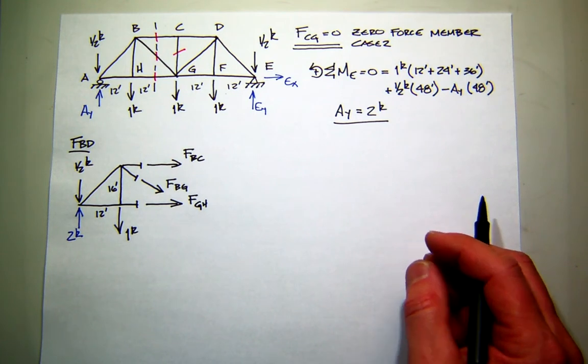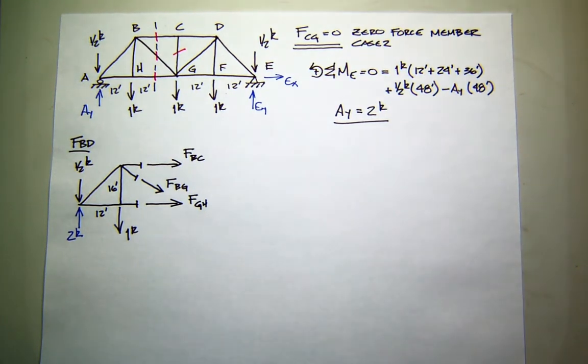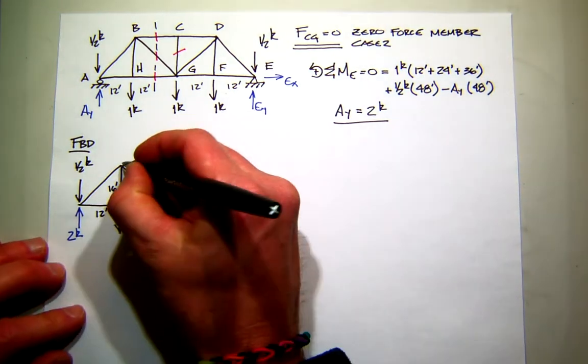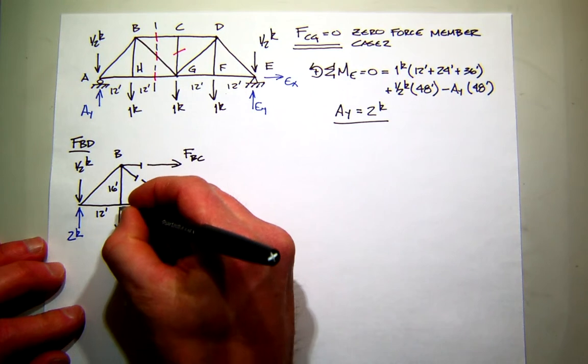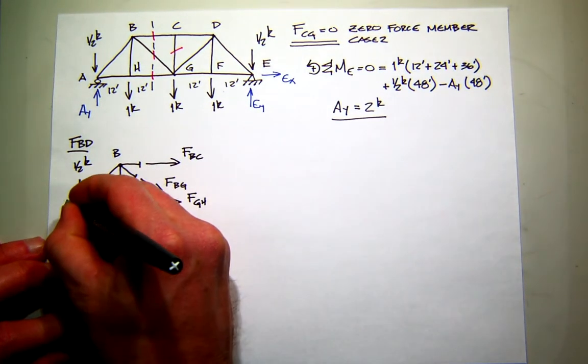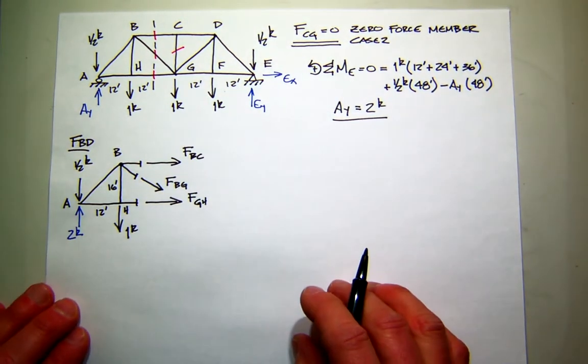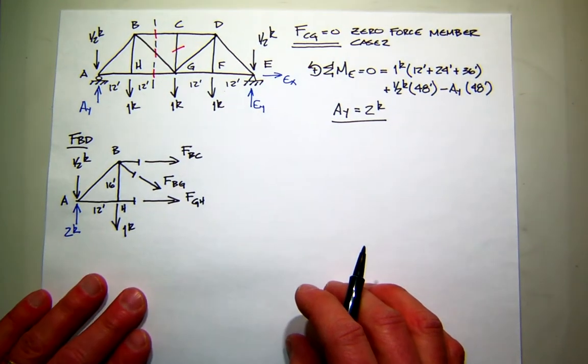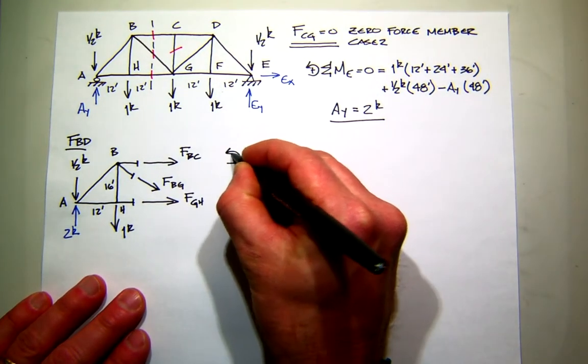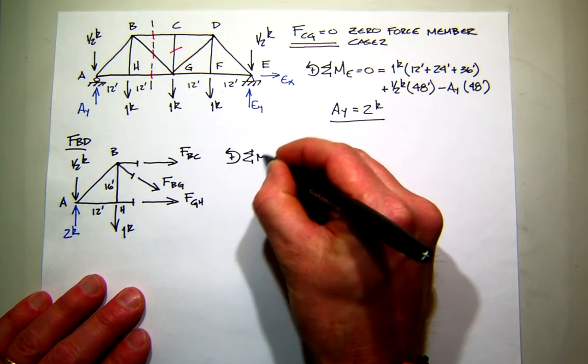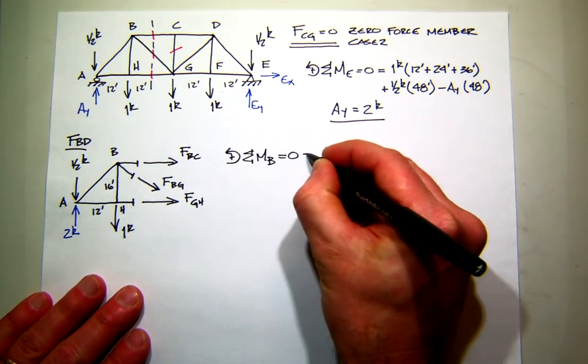Did I leave anything off? Now, thinking about what we talked about earlier with method of sections, what would be a good equation to try? Let's try to find one equation and one unknown, and that it doesn't incorporate any previous calculations. So I think we can do that from our strategy we talked about previously. Let's try moments first. What would be a good place to sum moments? I heard somebody say B. So let's do that. It's sum moments about B. So I'll sum moments about B, set them equal to zero.